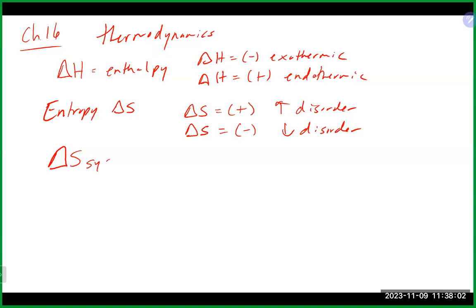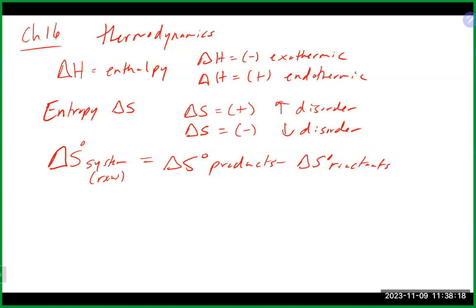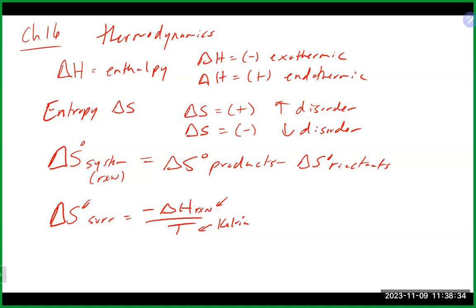There is the entropy of the system, which is typically the reaction. To calculate that, we do delta S of our products minus the delta S of our reactants. The delta S of the surroundings equals minus delta H over T, where T is in Kelvin. A couple of things to watch out for: delta H is typically in kilojoules, while entropy is usually in joules. So when using these values together, you need to do a unit conversion so you're not off by a factor of 1,000.